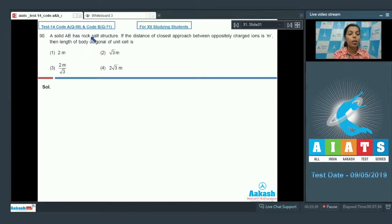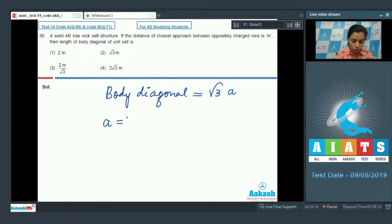After that is the turn for next question. A solid AB has rock salt type of structure. If the distance of closest approach between positively charged ions is m, then the length of body diagonal of the unit cell is... We know that in case of rock salt type of structure, body diagonal is equal to √3a.